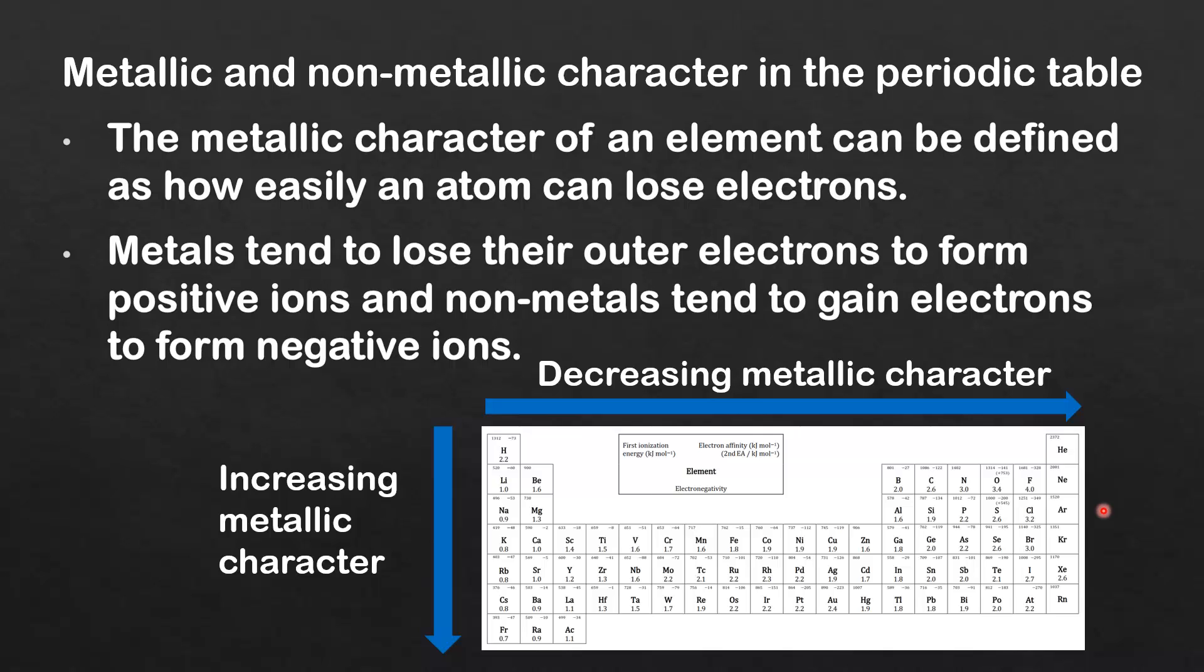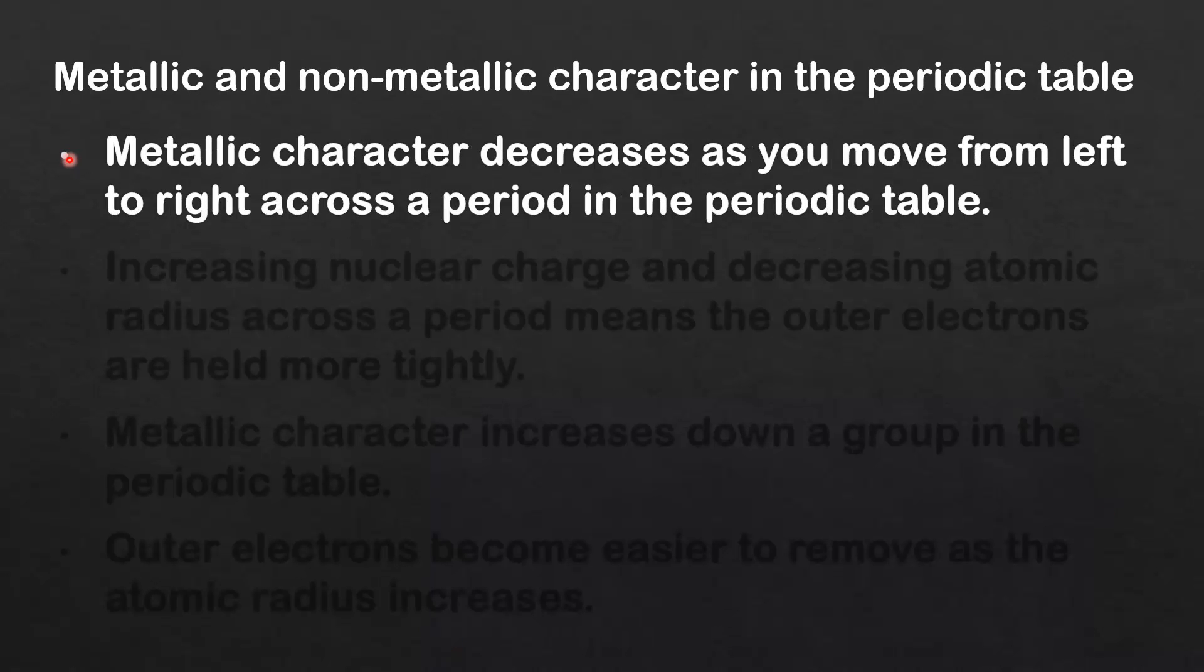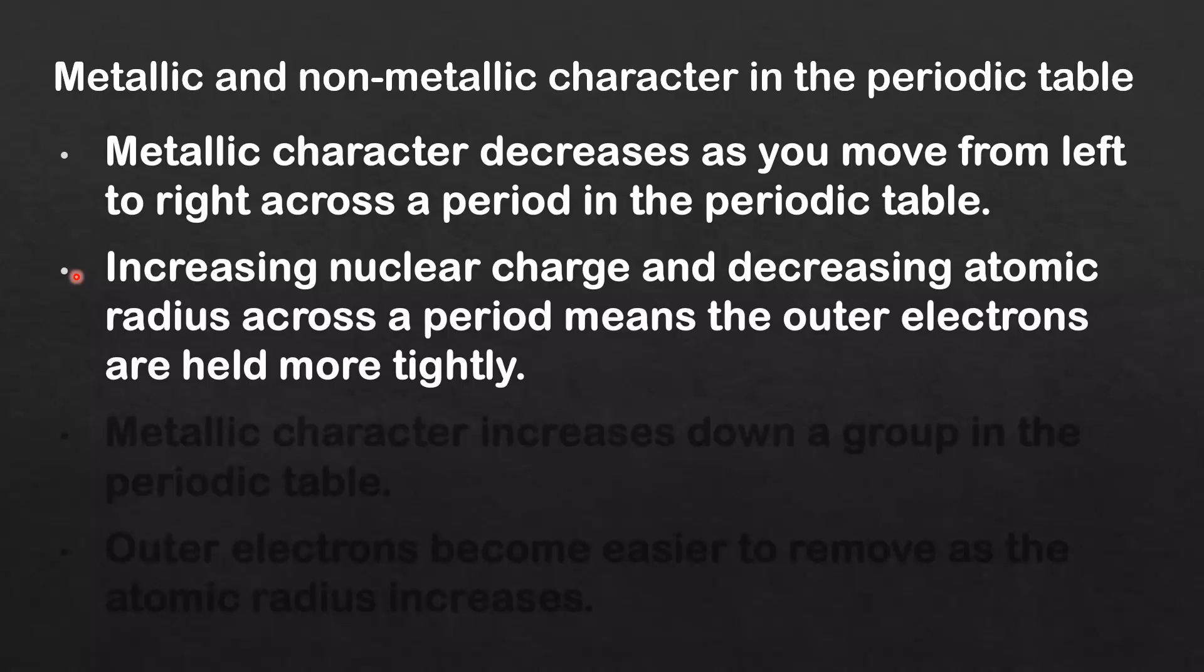So next we'll look at the reasons for this trend. Metallic character decreases as you move from left to right across a period in the periodic table, and the reason for this is increasing nuclear charge and decreasing atomic radius across a period means the outer electrons are held more tightly.